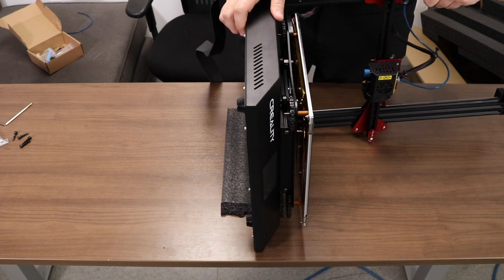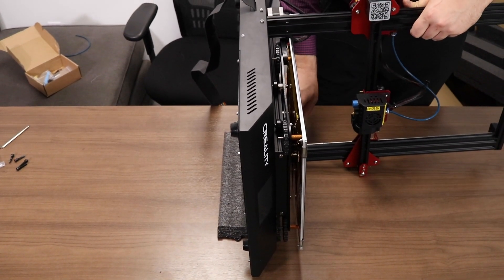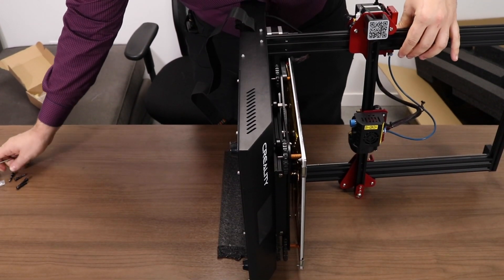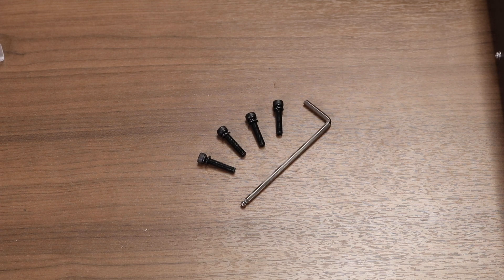Carefully take the gantry and line it up with the four holes in the base. It's important during this step to make sure that the Z-axis motors aren't crushing the Z-axis motor wires. The kit comes with four black screws and you can find the Allen key for them in the toolkit.